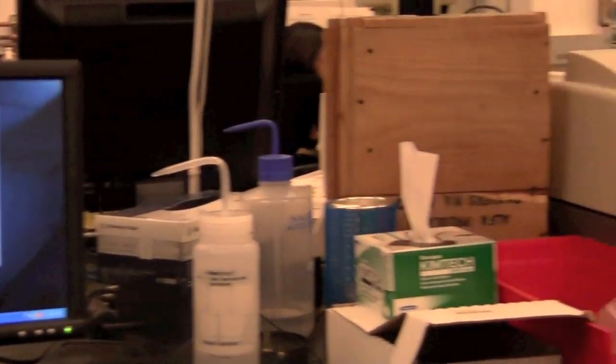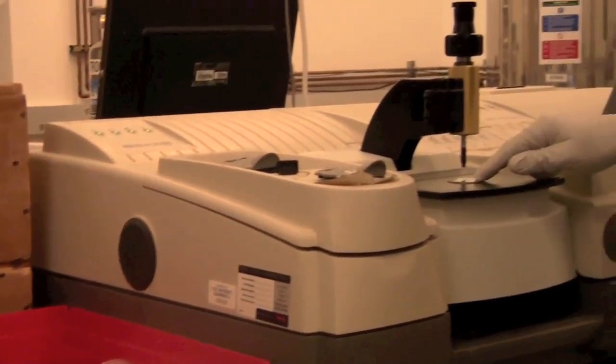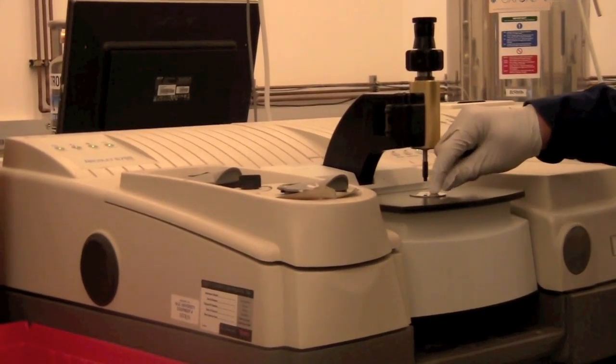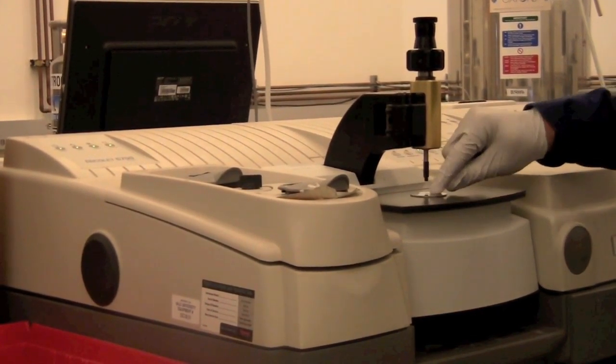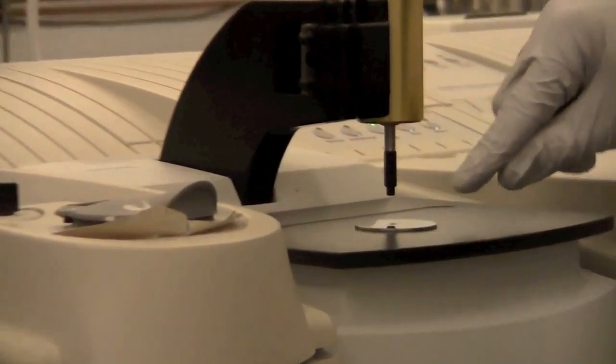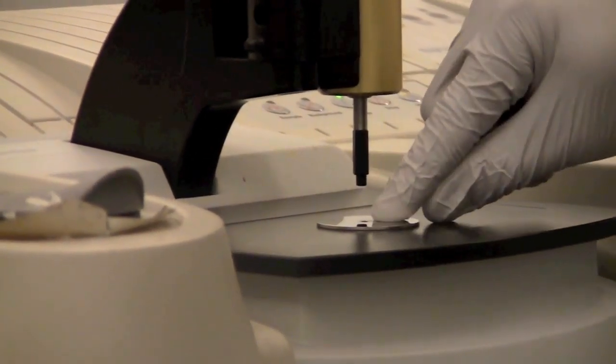You can put solid or liquid samples on the diamond here. The diamond is just the small circle in the center, not the whole area here. It just looks like a little clear window in the center of this sample tray here.